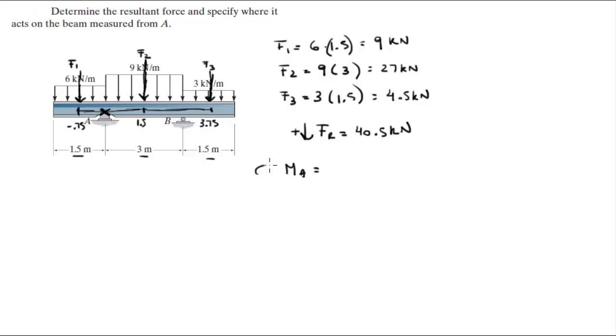So the moment at A, assuming clockwise is positive, F1 would turn this lever arm counterclockwise so it will be negative 0.75 times F1 which is 9 kN. Let's actually not put the units so we don't make too much clutter.